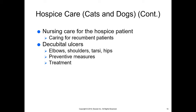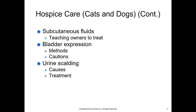Nursing care for the hospice patient includes caring for recumbent patients — those that cannot get up. A common problem is decubital ulcers, or pressure sores, from lying on bony prominences such as elbows, shoulders, tarsi (hock joints), and hips. Decreased blood flow to these areas kills the surrounding tissue, forming an ulcer. Prevention includes providing a padded surface and turning the animal every couple of hours. Decubital ulcers may require treatment if not caught early.